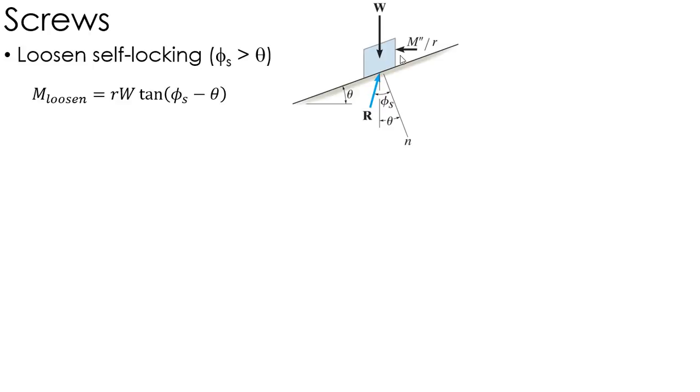So if you think about a car jack, you jack it up on that screw, you let go of it, and it stays put. It would be very bad if it didn't, and it crashed down on top of who's ever underneath the car changing the oil or whatever. So if the friction angle is bigger than the lead angle, then that is a self-locking screw.